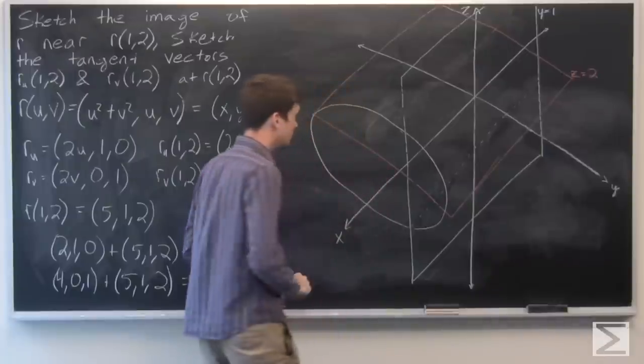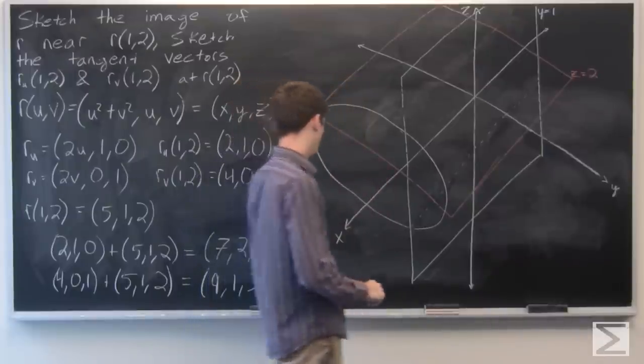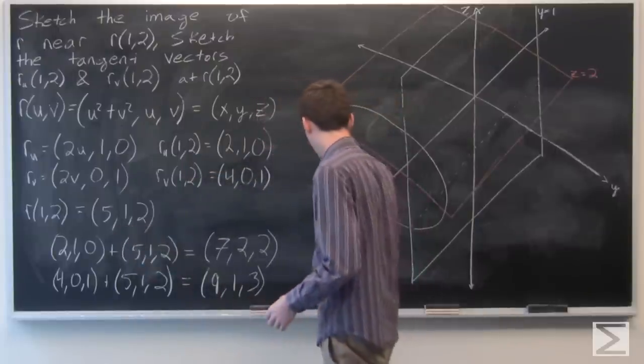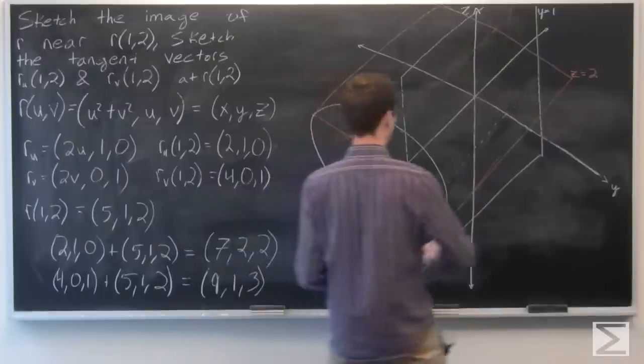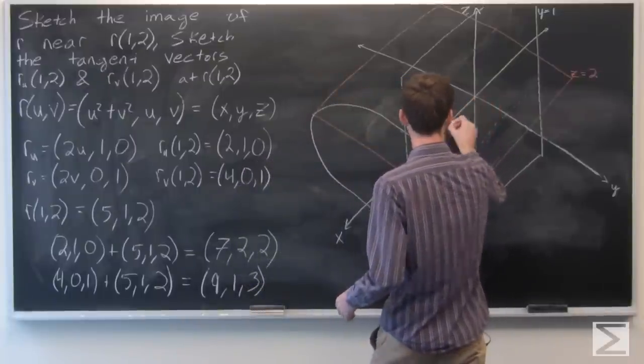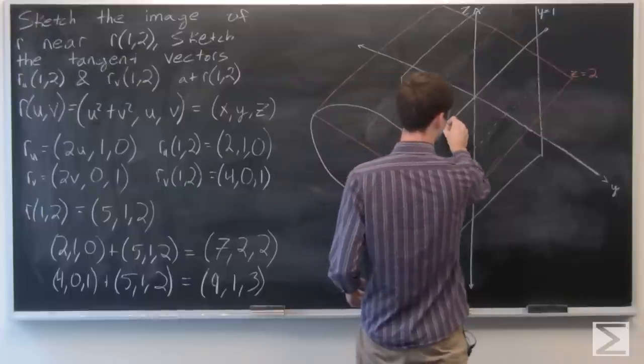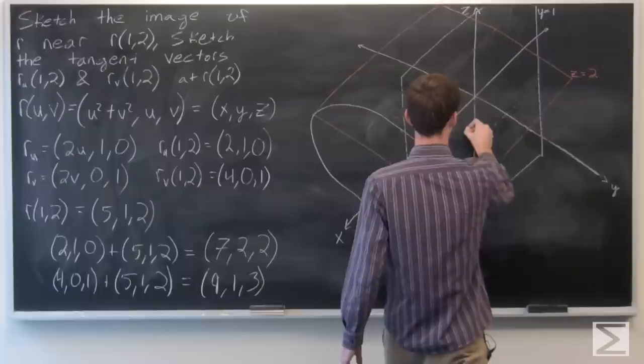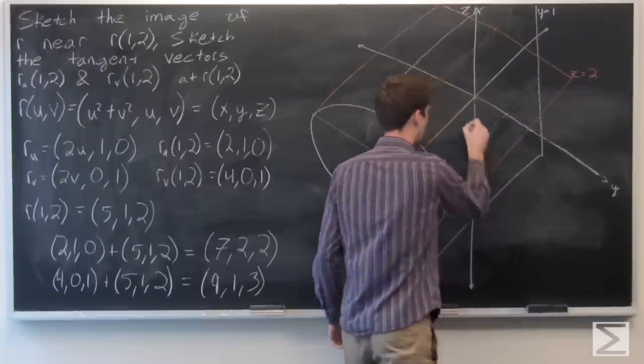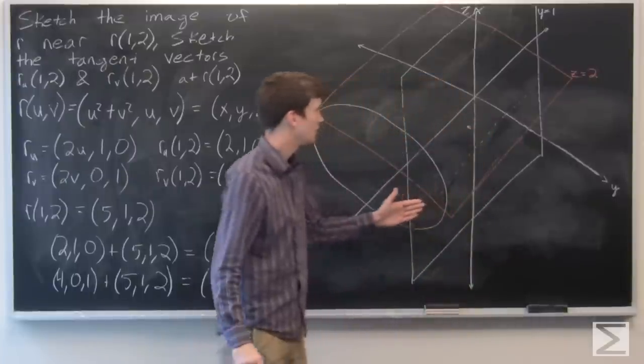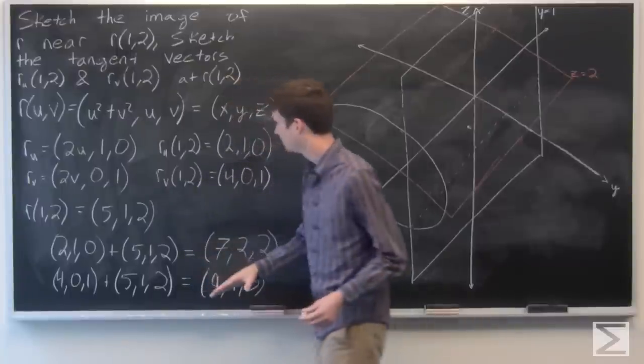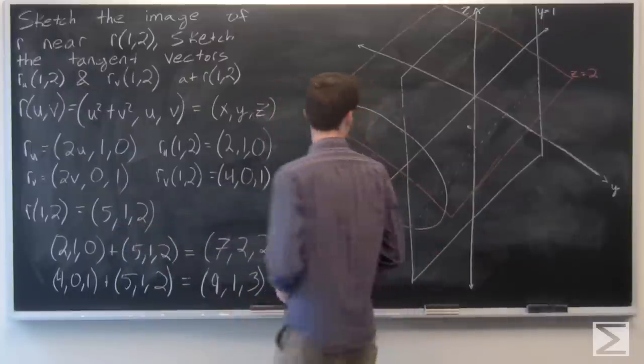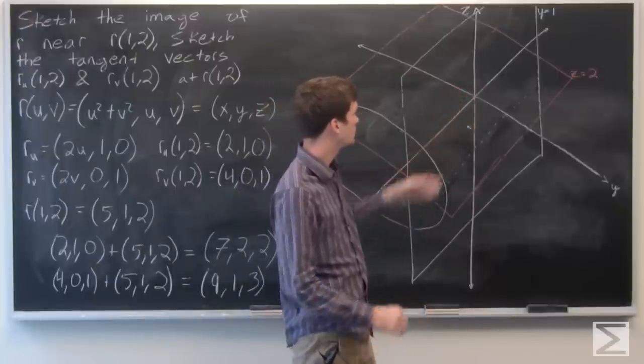If we were to take the point (1,2), r at (1,2), we have (5,1,2). So we go out 5, over 1, and up 2. So that's approximately right there. And this is going to be on, so we have y is 1 and z is 2, so it'll be on both of these planes where they intersect, and x equals 5.